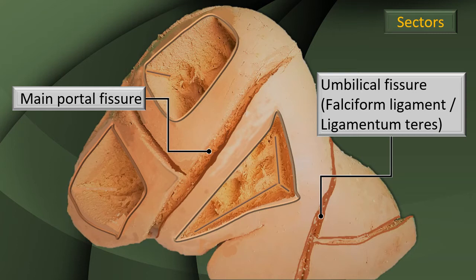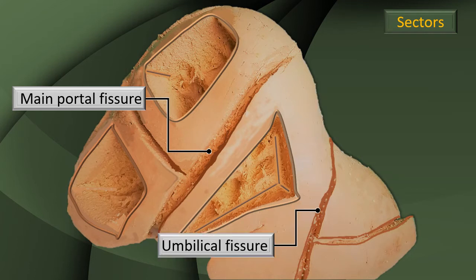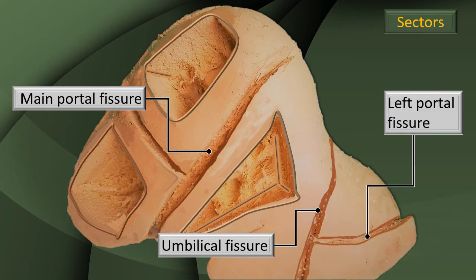We are beginning to divide the lobes into sectors, and we will bring in the nomenclatures in due course. We now have the median main fissure — the portal fissure — and the umbilical fissure. There is a third fissure called the left portal fissure. This fissure is further to the left of the umbilical fissure, and it is important for the final demarcation of some of these sectors into segments.